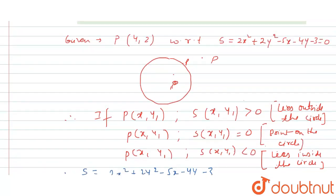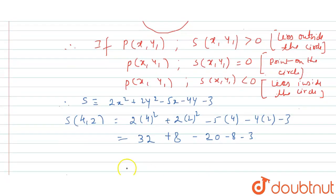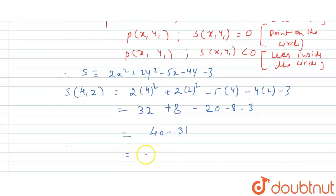The point is given to us as (4,2), so we have to plug it into the given equation: S(4,2) = 2(4)² + 2(2)² - 5(4) - 4(2) - 3. When we solve it we will get 32 + 8 - 20 - 8 - 3, which gives us 40 - 31.